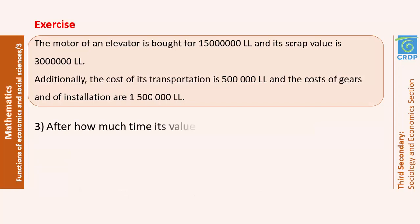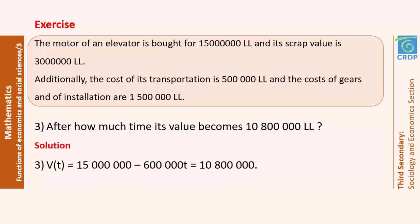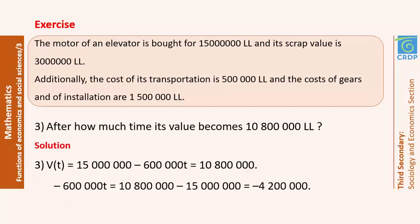Question 2: what is the value of the motor after 10 years? V(10) = C − D(10) = 15,000,000 − (600,000 × 10) = 9,000,000 Lebanese lira. Question 3: after how many years will its value become 10,800,000 Lebanese lira? Setting V(T) = 10,800,000 and solving: 15,000,000 − 600,000T = 10,800,000, giving T = 7 years. After 7 years of using the motor, its value will become 10,800,000 Lebanese lira.